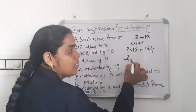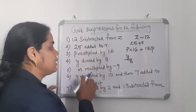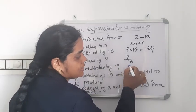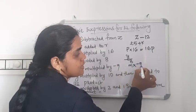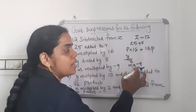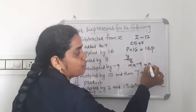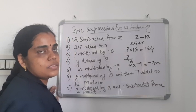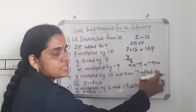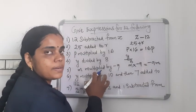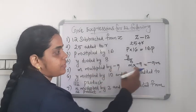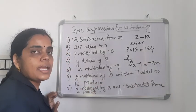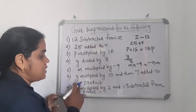Y divided by 8: that is written as Y divided by 8. Then M multiplied by minus 9: M into minus 9. Since there is a negative symbol, you write the negative sign first, then the number, then the variable — so it is minus 9M. In the case of multiplication with negative numbers: negative symbol first, then number, then variable.